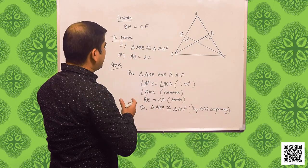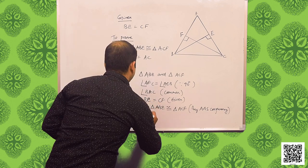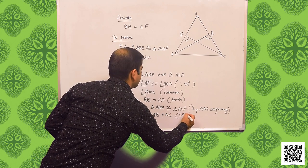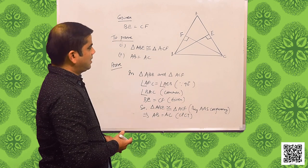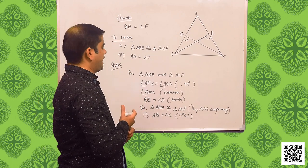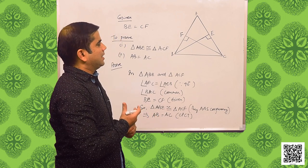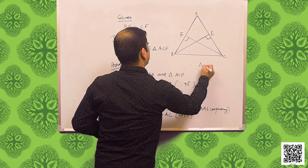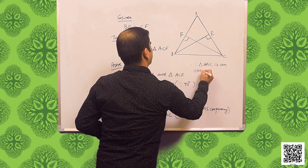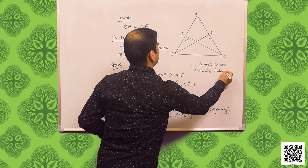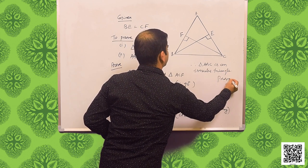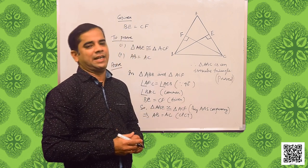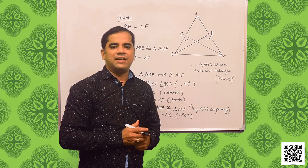Since these two triangles are congruent, AB is equal to AC by CPCT. In triangle ABC, AB is equal to AC means triangle ABC is an isosceles triangle. In this way, we have proved that triangle ABE is congruent to triangle ACF, as well as triangle ABC is an isosceles triangle. Hope you have understood.